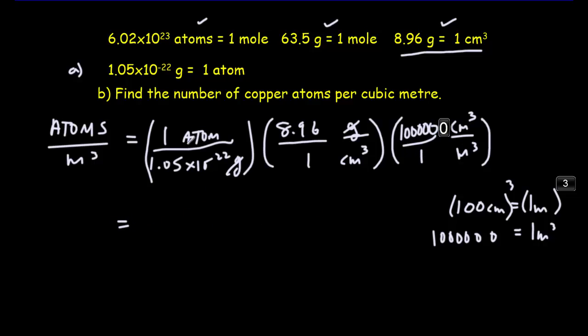So now if I take 1, divide by 1.05 times 10 to the minus 22, multiply by 8.96 and then multiply by a million. And then I'll get an answer there of 8.5 times 10 to the 28th atoms in a meter cubed.